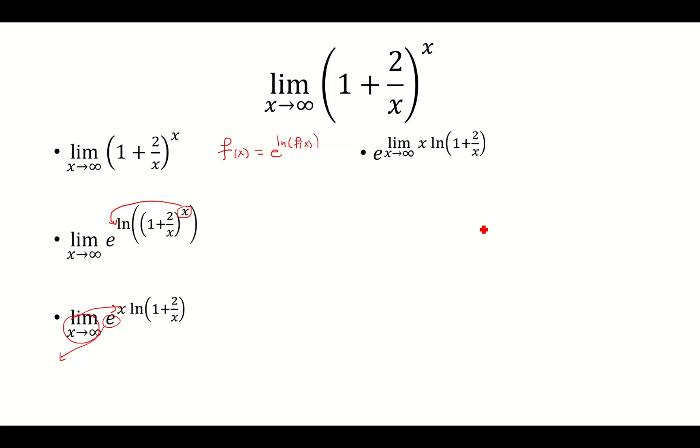And at this point, if I were to plug in infinity in the exponent, that's infinity times 0. So whenever you have that case, you want to divide by the reciprocal of one of the functions. So we're going to do that with x. So instead of saying x, we're going to do 1 over 1 over x.